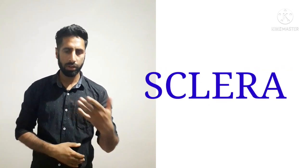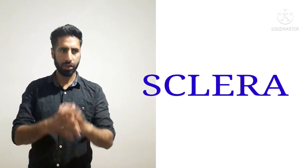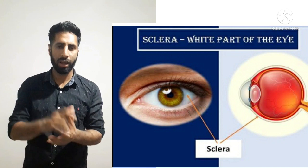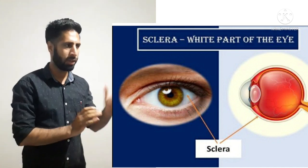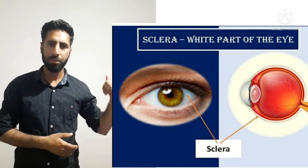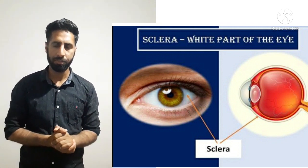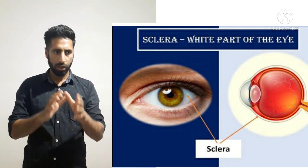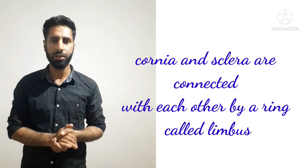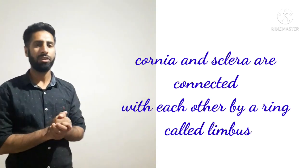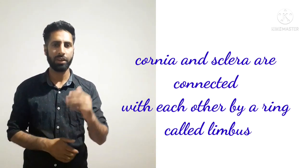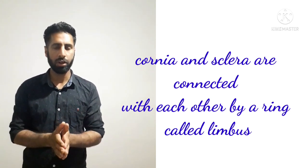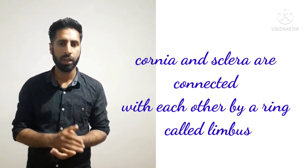The other part is the sclera. Our eyes have a white portion, and that white portion of the eye is called the sclera. As you can see in the diagram, this wide portion around the eye is the sclera, and it has a radius of 12 millimeters. The cornea and sclera are linked with each other by a ring called the limbus. So the limbus is the ring that connects the cornea with the sclera. This was the first or outermost layer of the human eye — the fibrous tunic.